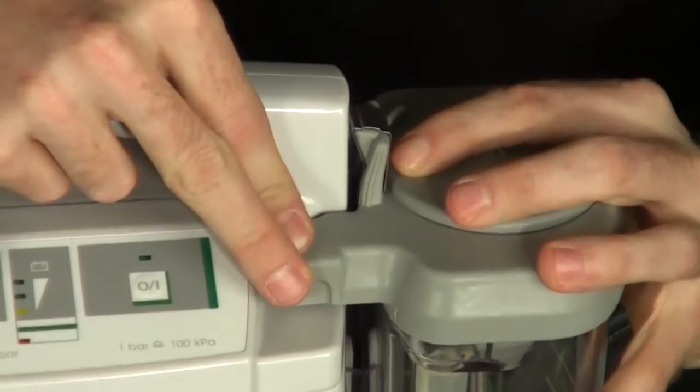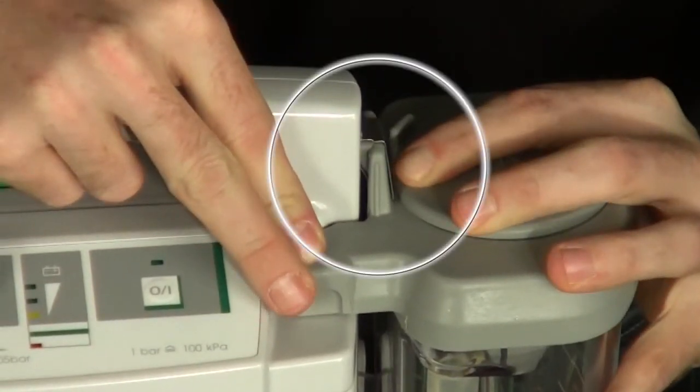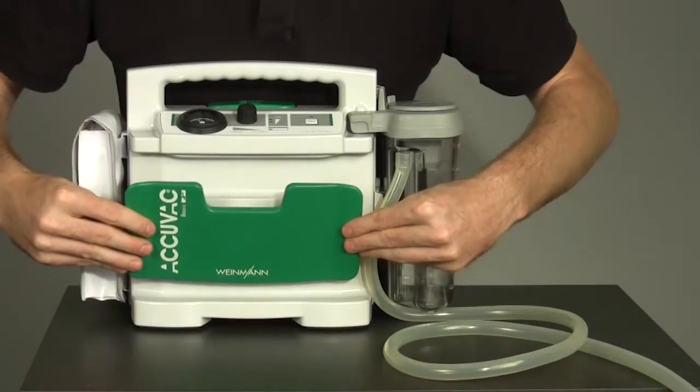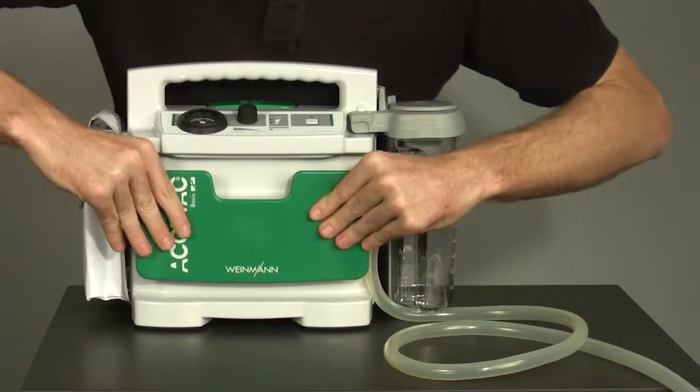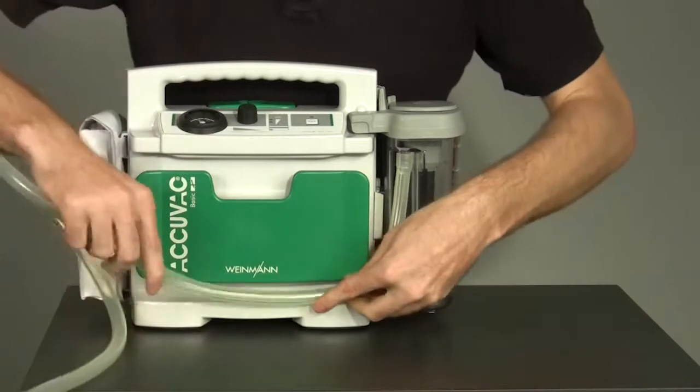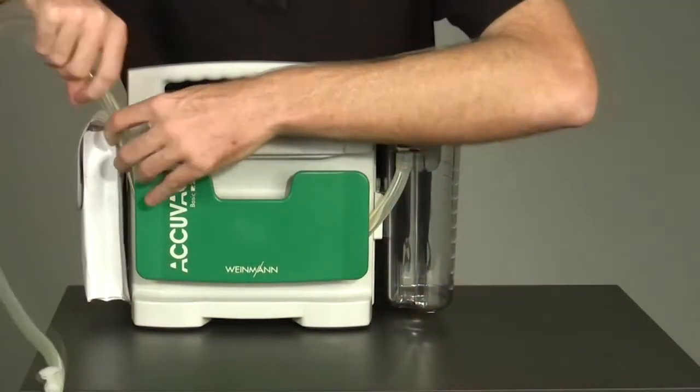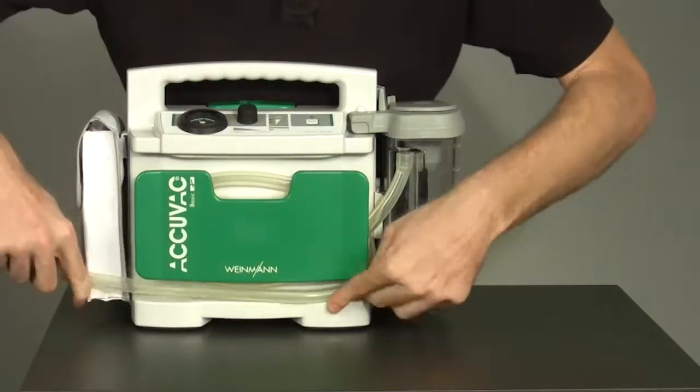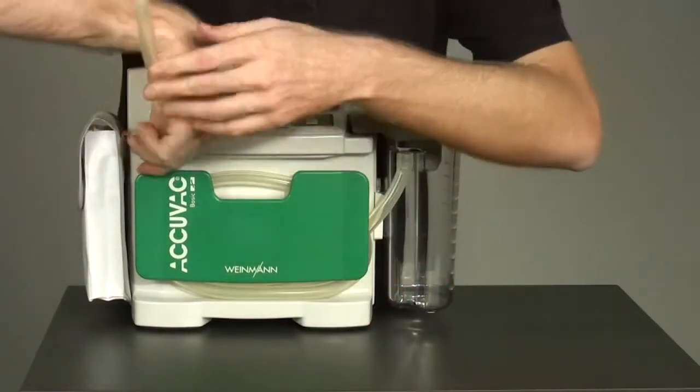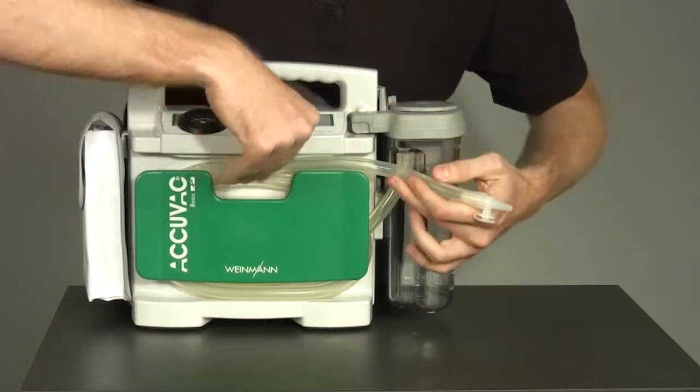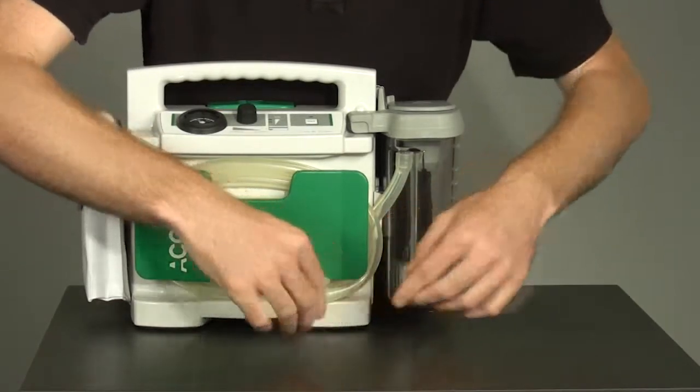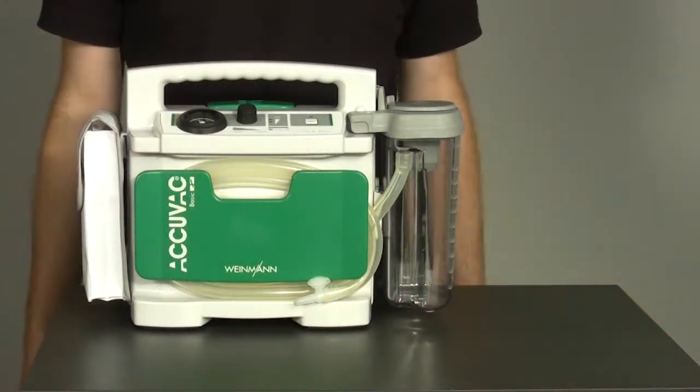When you push the reusable collection canister into place, make sure that the locking tab clicks into the notch meant for it. You can then put the tube holder plate back on the device and wind the suction tube around it. Now your AcuVac Basic is ready for use.